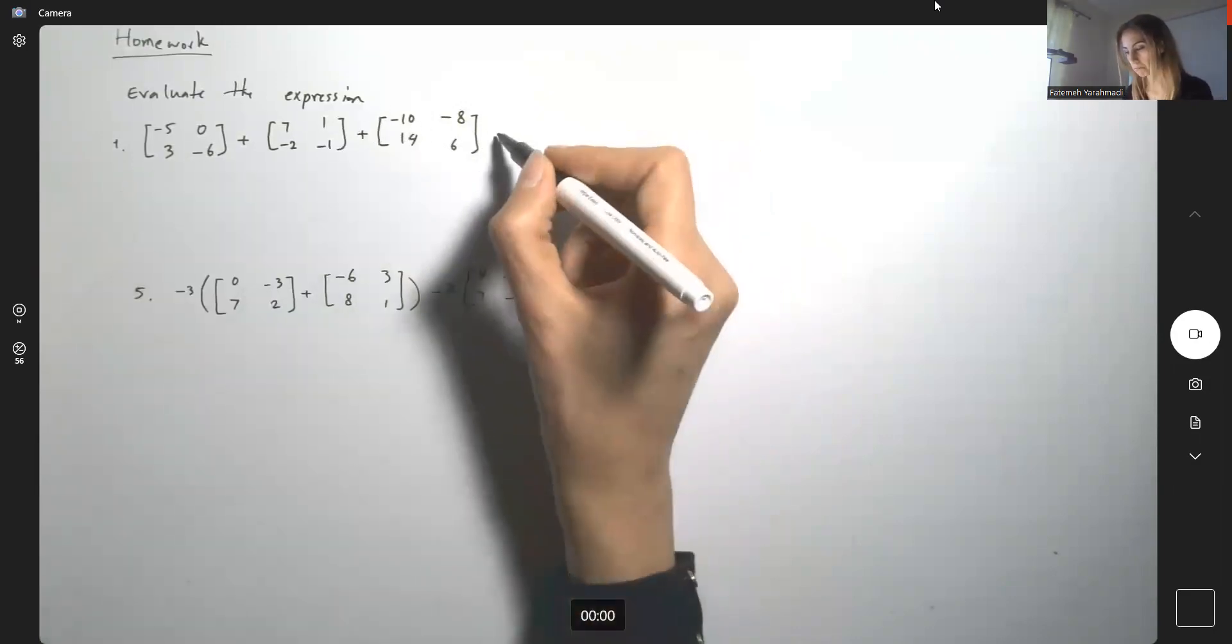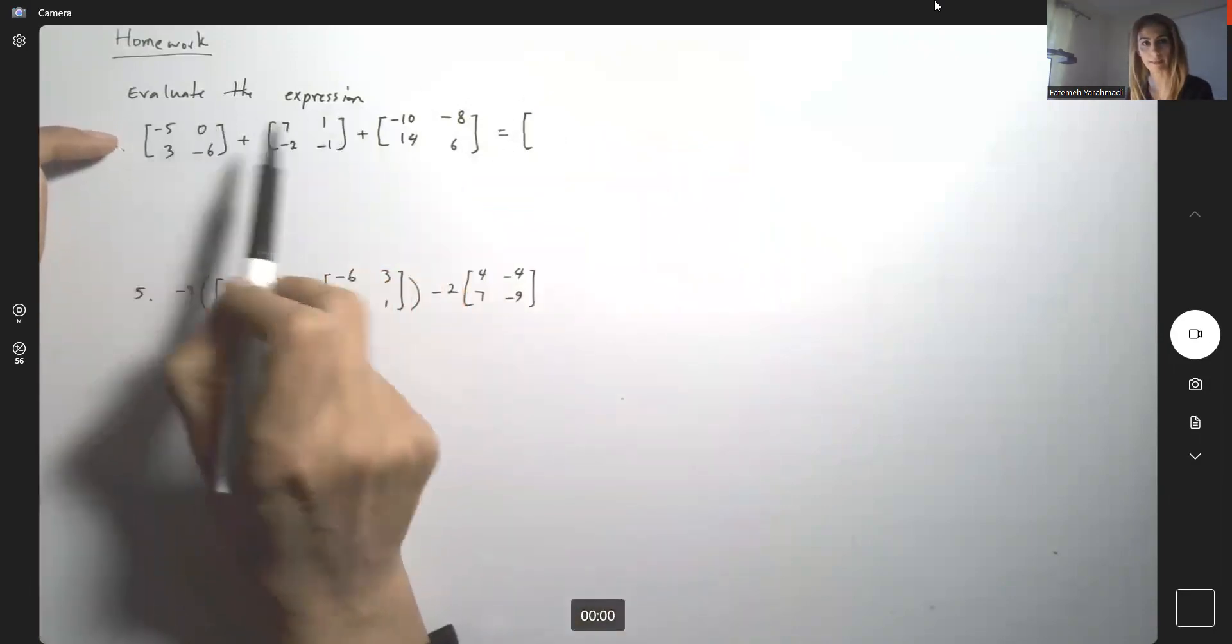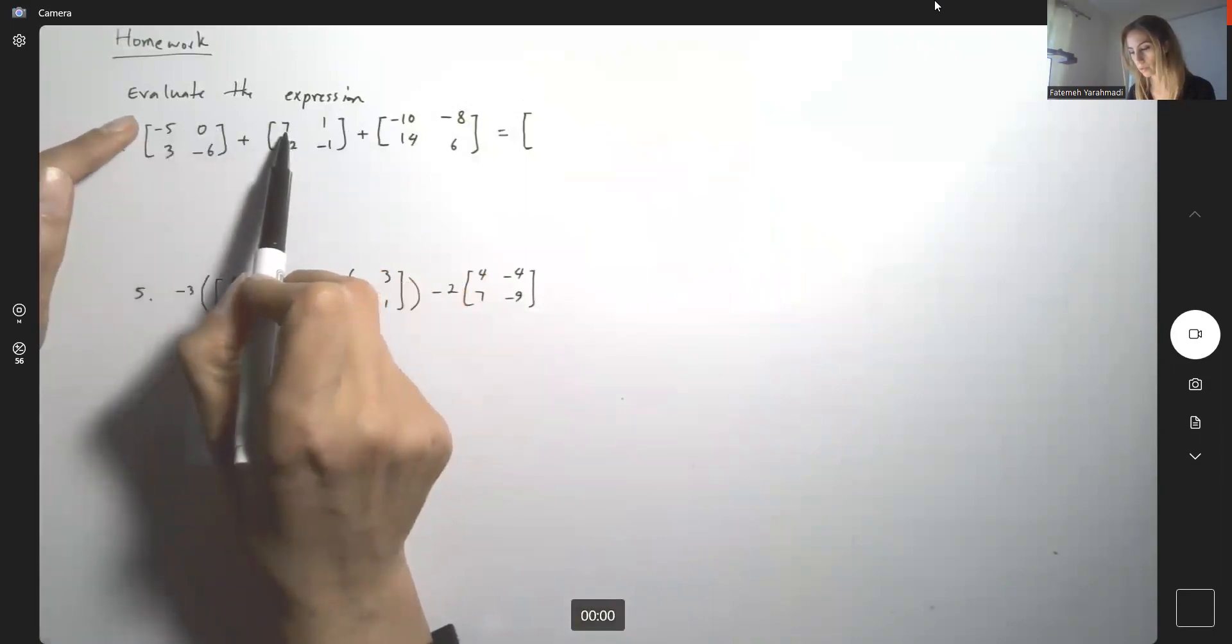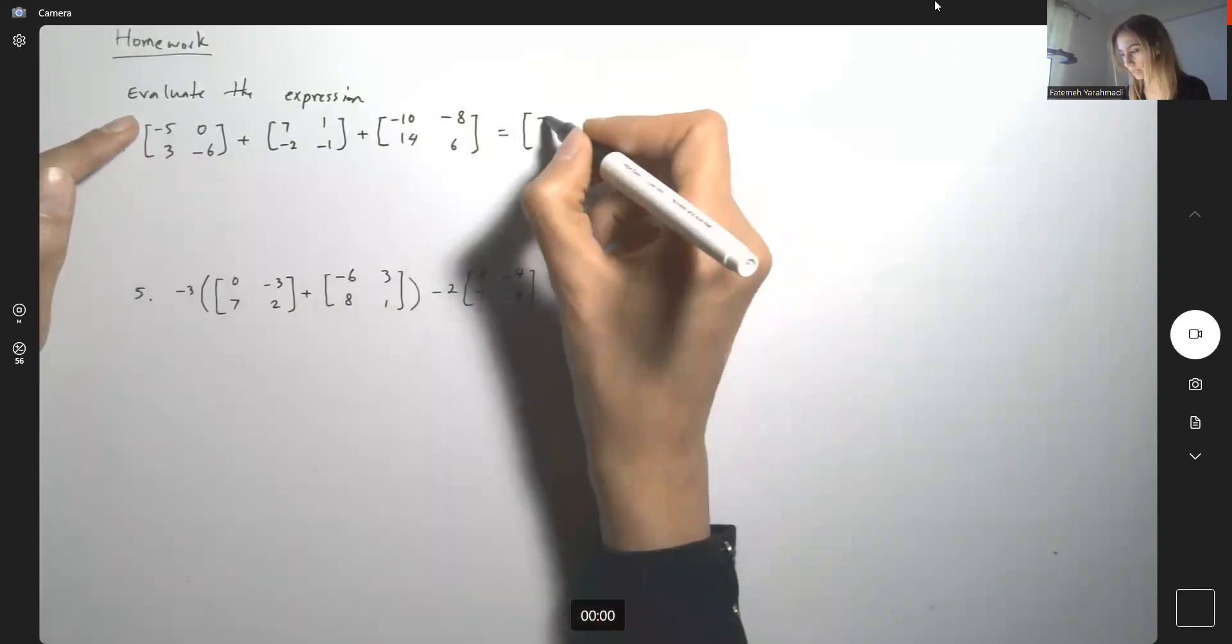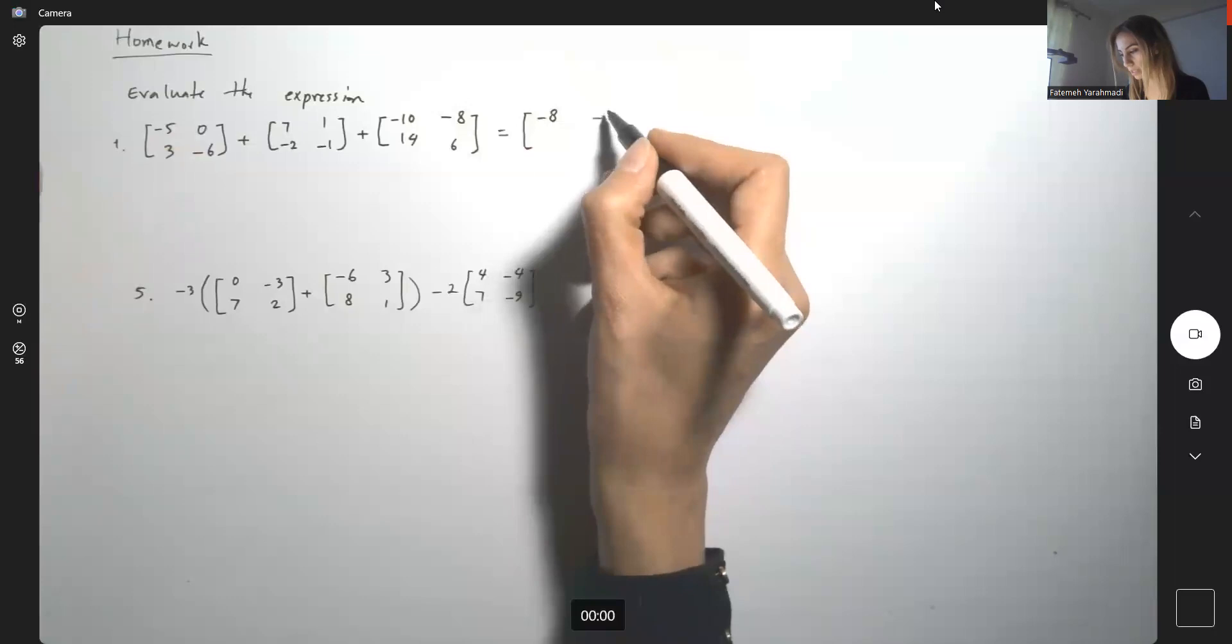We'll just go taking the corresponding first entries, add them all together. So negative 5 plus 7, 2 minus 10, negative 8. 0 plus 1, 1 minus 7.